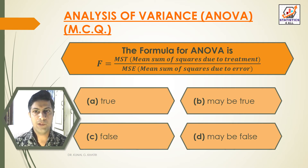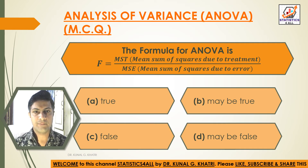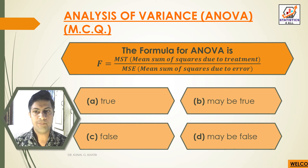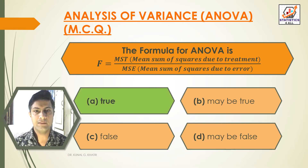Next question: The formula for ANOVA is F equals MST (mean sum of squares due to treatment) divided by MSE (mean sum of squares due to error). Option A: True. Option B: May be True. Option C: False. Option D: May be False. Answer: Option A, True. The formula for ANOVA is F = MST divided by MSE.